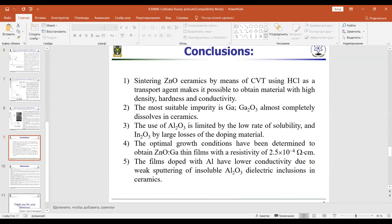Conclusions: Sintering zinc oxide ceramics by means of CVT using hydrogen chloride as a transport agent makes it possible to obtain material with high density, hardness, and conductivity. The most suitable impurity is gallium and gallium oxide, almost completely dissolved in ceramics.